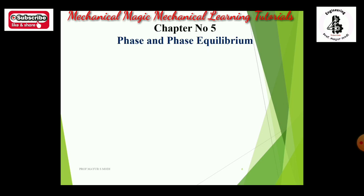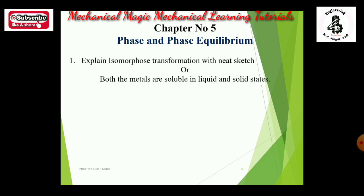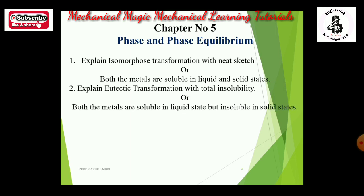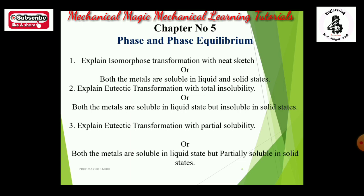Chapter 5 is phase and phase equilibrium. Explain isomorphous transformation with a neat sketch — in another form: both metals are soluble in liquid state and solid state — for 7 marks. Second question: explain eutectic transformation with total insolubility — both metals are soluble in liquid state but insoluble in solid state. Third pattern: explain eutectic transformation with partial solubility — both metals are soluble in liquid state but partially soluble in solid state. One of these theories has maximum chance.